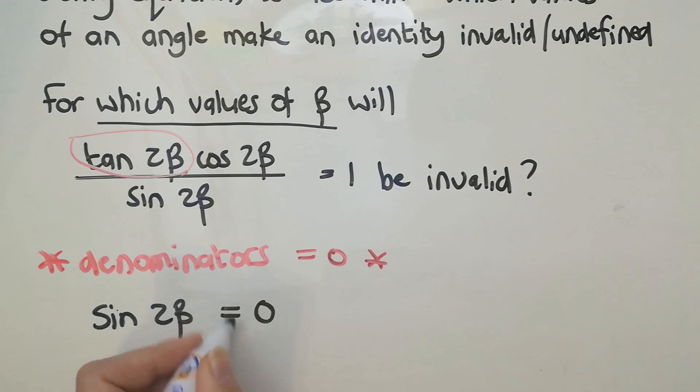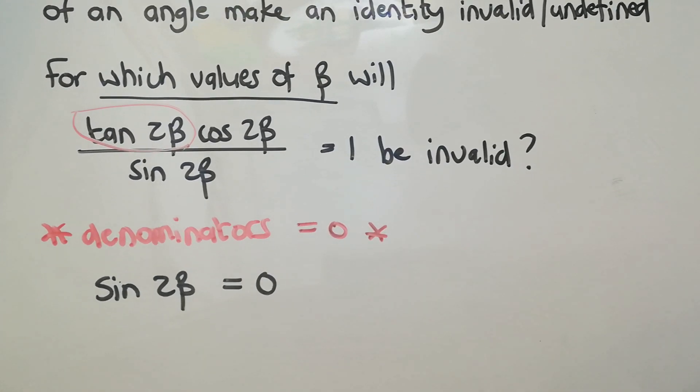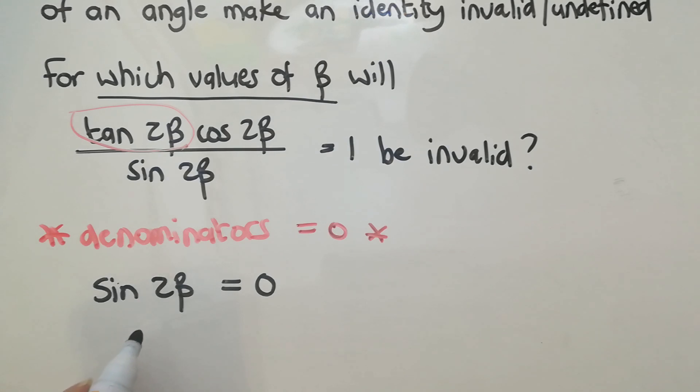So you might feel like you need to cross that through, but you mustn't because you're trying to say for which values is it invalid, in which case you're saying, well, if this does exist. So you've got to make it exist and then solve.